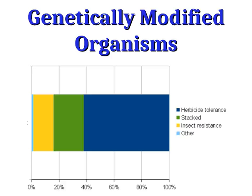Insect resistance means that those crops produce their own insecticide — their own chemicals that drive away pests. If you can drive away the pests, that's going to reduce your losses and therefore increase the yield for human use at the end. So those two modifications are by far the most common that we actually see in practice today.